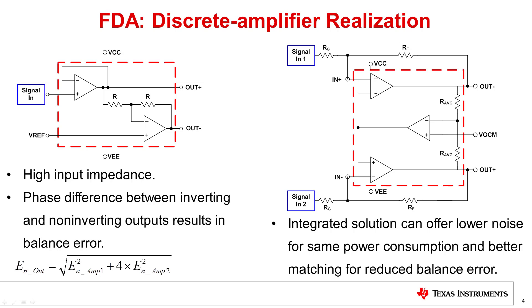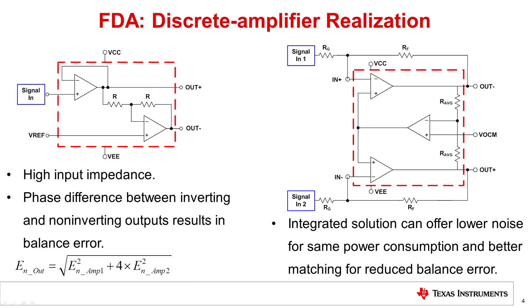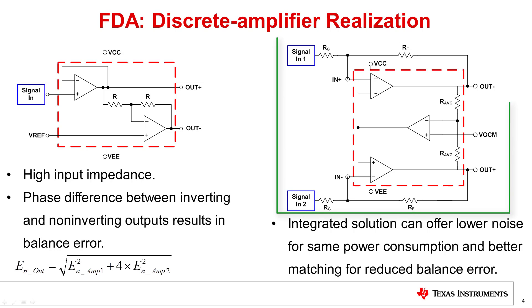Other things remaining the same, better matching and symmetry will always achieve superior common mode rejection and distortion performance. The output noise from the two amplifiers is given by the equation shown here. An integrated fully differential amplifier typically has better noise performance for the same quiescent power consumed by the two discrete amplifier architecture. Another disadvantage is the lack of common mode voltage control, as the common mode gain is fixed at 1 volt per volt in this configuration. A second method of realizing a fully differential amplifier using discrete single-ended op-amps is shown here.